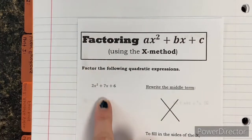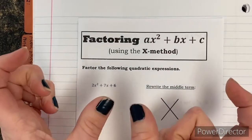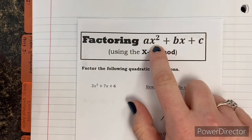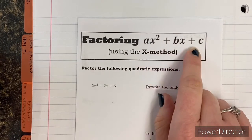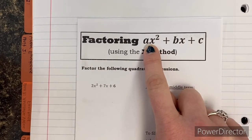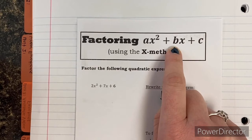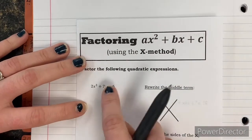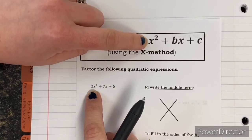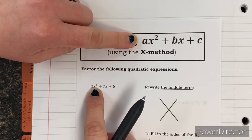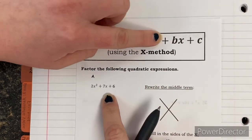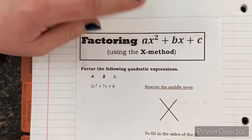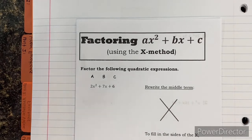Now that we have the backstory on why factoring is important, we're trying to take standard form and get it into factored form — the two sets of parentheses. The first thing to address is identifying a, b, and c in ax squared plus bx plus c. In this first example, 2x squared plus 7x plus 6, the 2 in front of x squared is my a value, the 7 is my b value, and the 6 at the end is my c value.